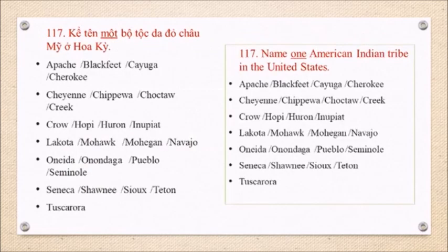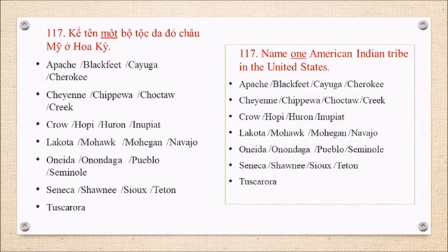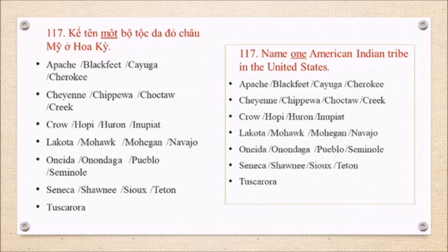Question 117: Name one American Indian tribe in the United States. Apache, Blackfeet, Cayuga, Cherokee, Cheyenne, Chippewa, Choctaw, Creek, Crow, Hopi, Huron, Inupiat, Lakota, Mohawk, Mohegan, Navajo, Oneida, Onondaga, Pueblo, Seminole, Seneca, Shawnee, Sioux, Teton, Tuscarora.